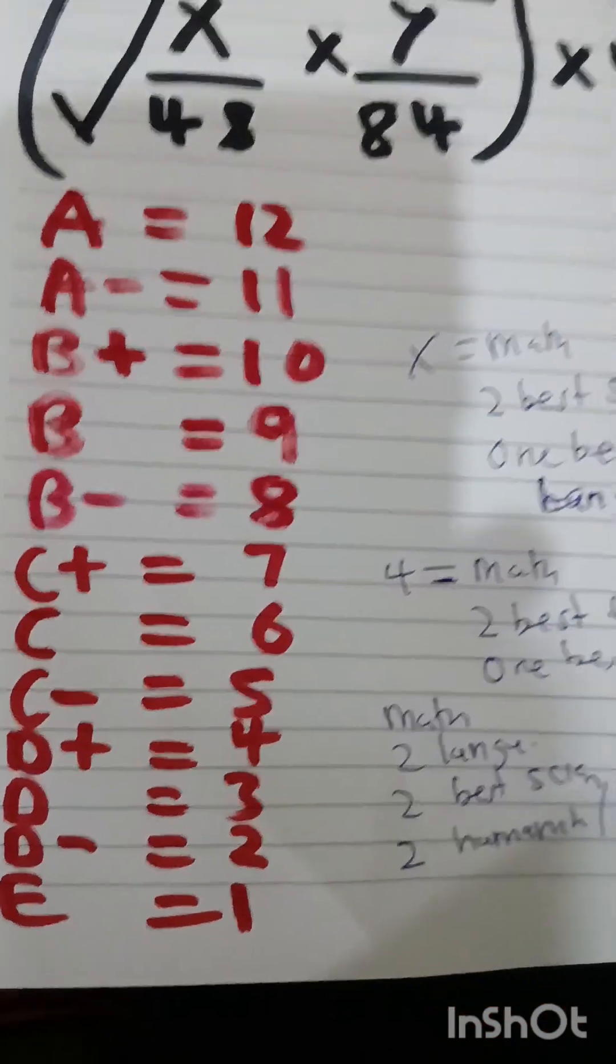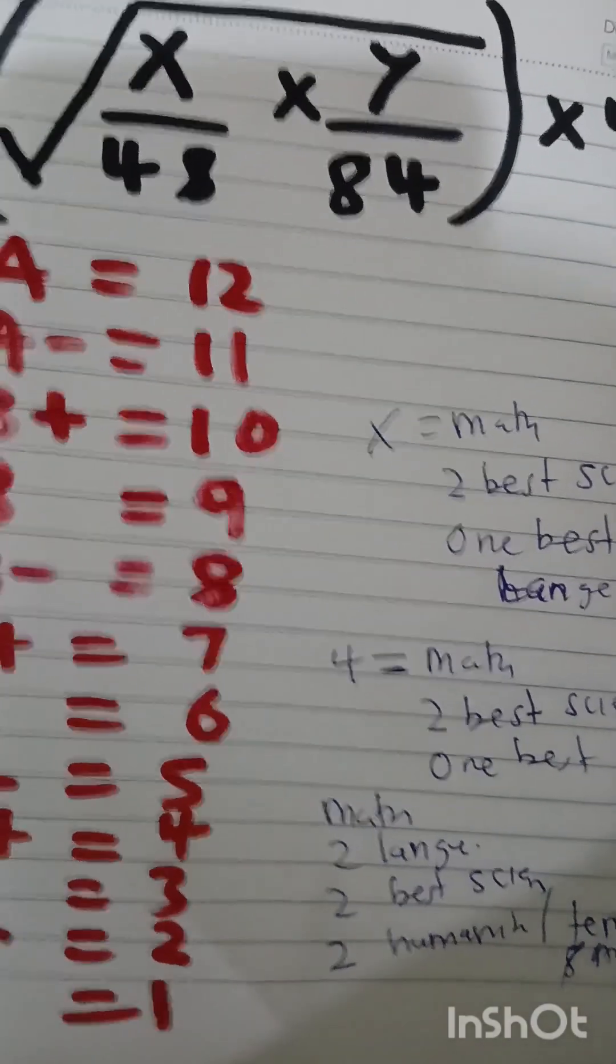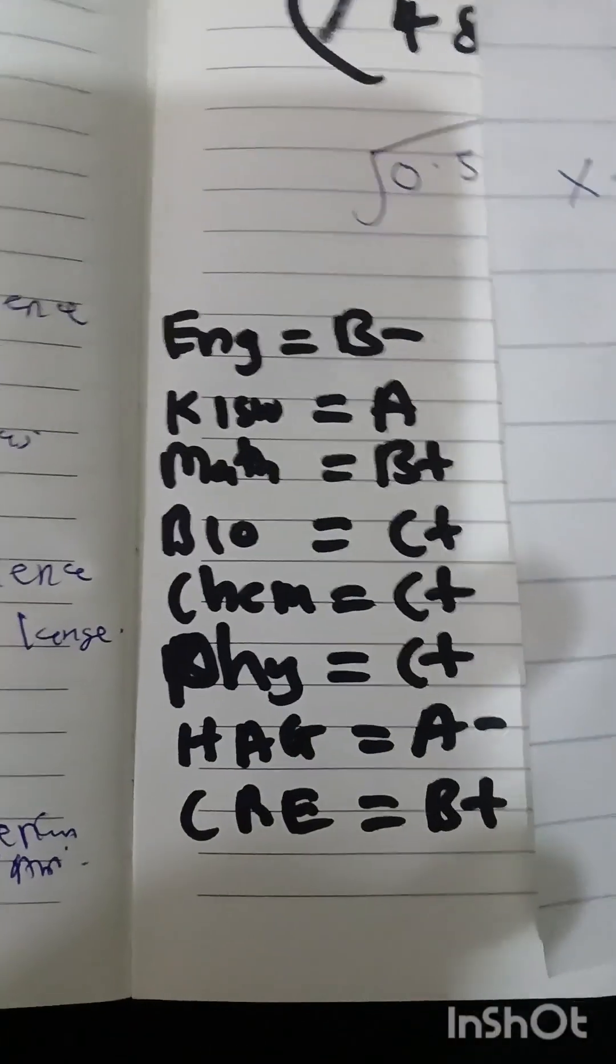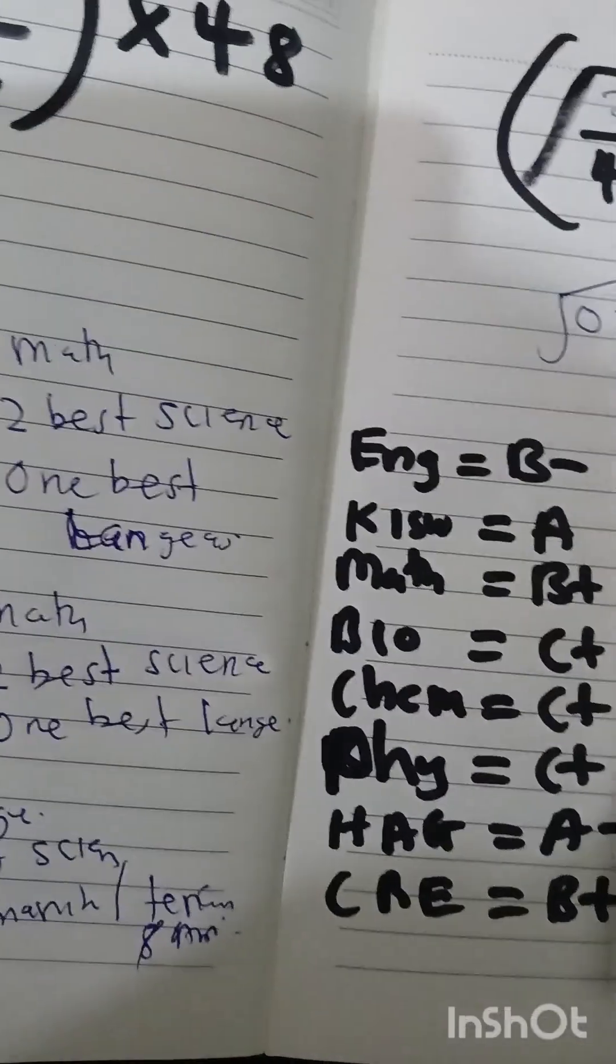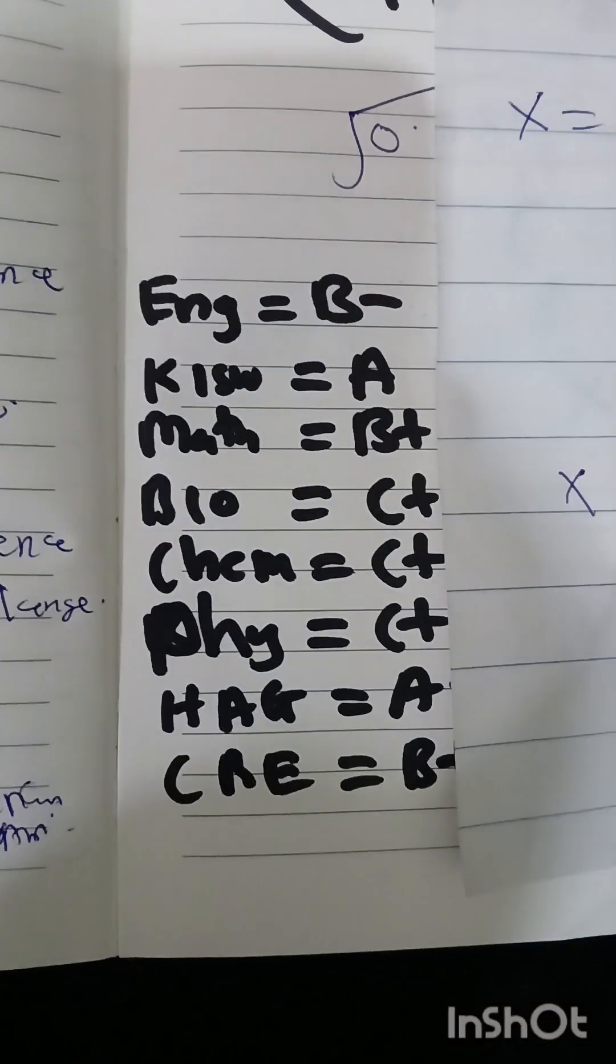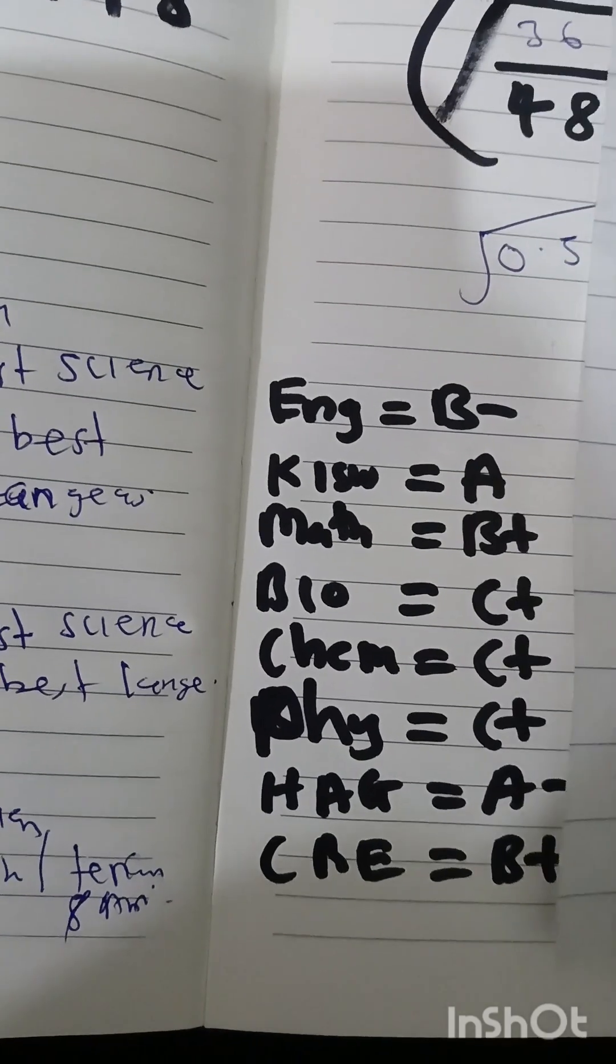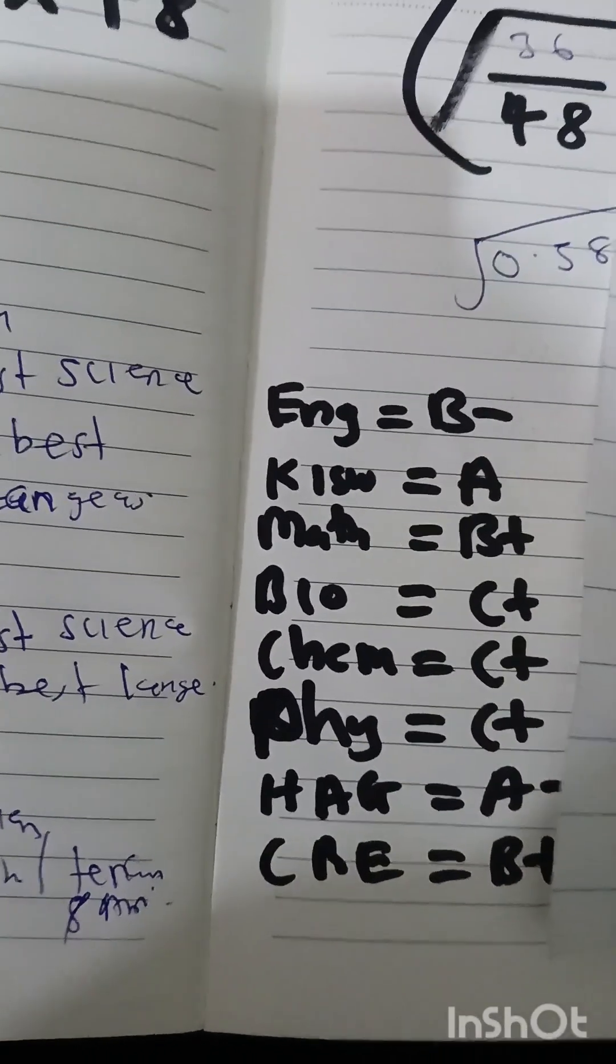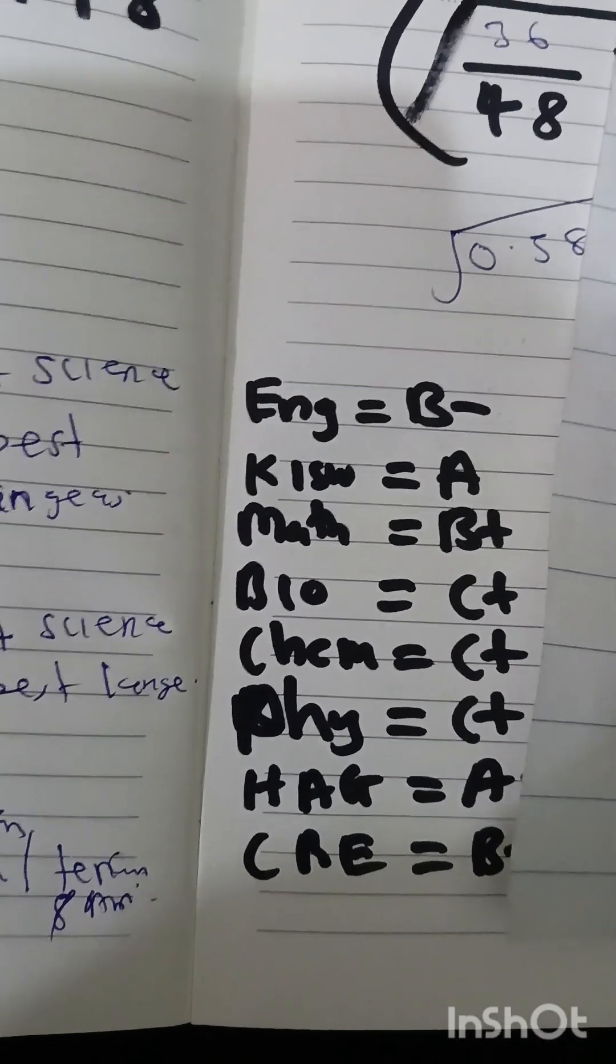So let's see an example on how to calculate the cluster points. Here are the results of a student. So for x, we shall pick math. The student got a B plus, which is equivalent to 10 points. Then we shall pick the best language, Kiswahili. The student had an A, which is equivalent to 12 points.